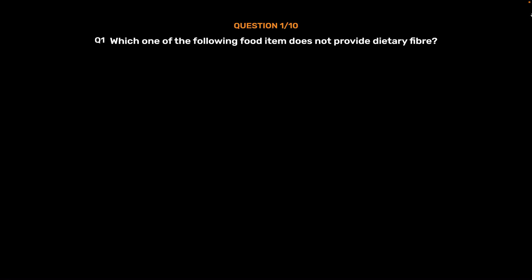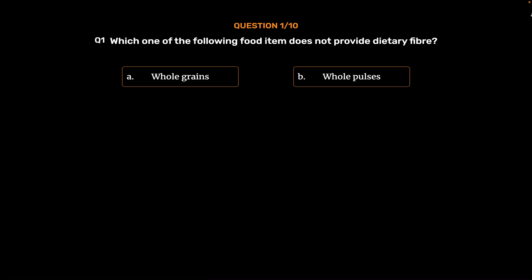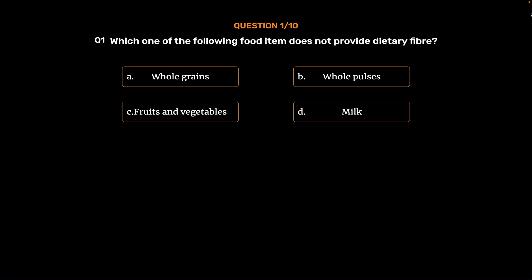Question number 1. Which one of the following food items does not provide dietary fiber? Option A: Whole grains. Option B: Whole pulses. Option C: Fruits and vegetables. Option D: Milk.